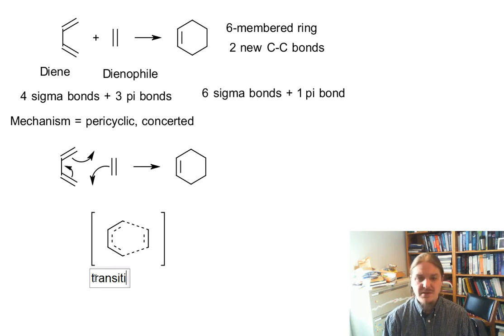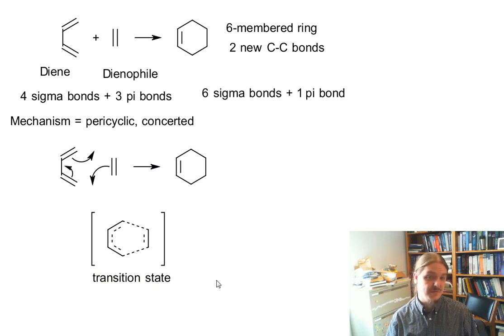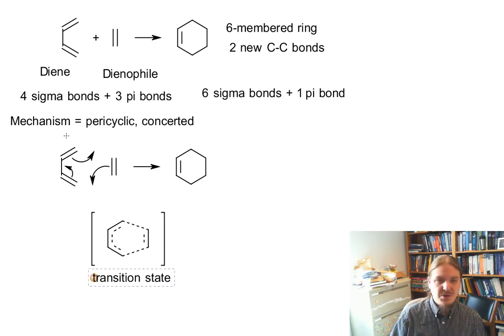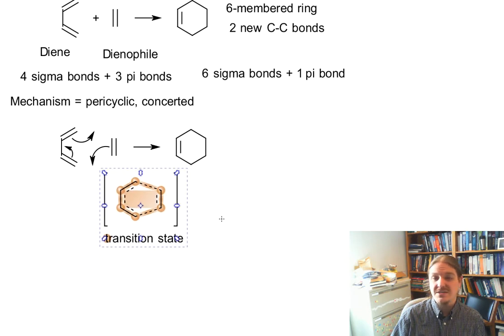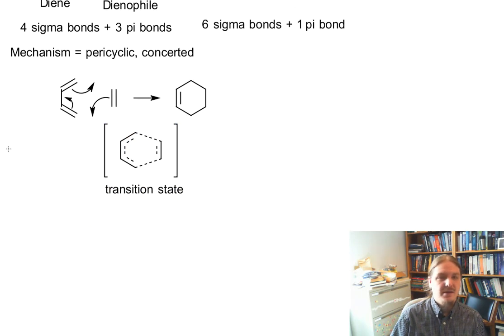All of the dashed lines in my transition state diagram represent bonds that are partially broken or partially formed. Chemists sometimes like to show this mechanism as indicating that the pi bond is going to form a new sigma bond between these two carbon atoms. But we often like to draw this arrow out into the space where that new bond is going to form to give a hint about this transition state.